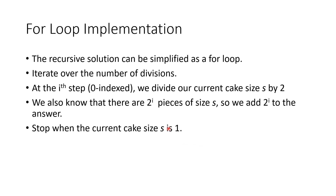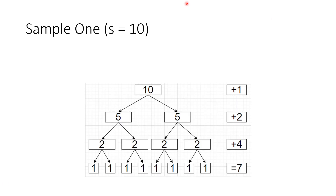Running through an example with size 10: one piece, add 2^0 = 1. After the cut we have two pieces, add 2^1 = 2. Then four pieces, add 2^2 = 4. Finally eight pieces all of size 1, so stop. The total is 1 + 2 + 4 = 7.